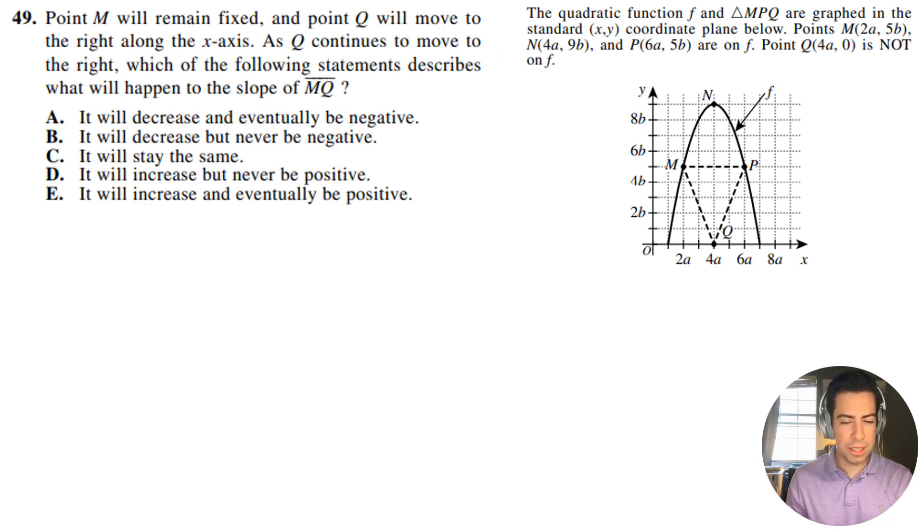Personally, I don't like this problem. I think it's a little bit confusing, but this is why I have to read it closely and pay attention. Point M will remain fixed, and point Q will move to the right along the x-axis. As Q continues to move to the right, which of the following statements describes what will happen to the slope of MQ? Let's just treat this like it's a line right here. So if we start here, this is M and this is Q, and we have our little graph here.